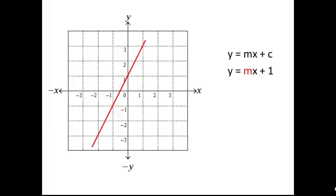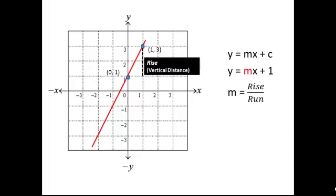To do this, we need to choose two points on the line. These are the two points that I've chosen. We then need to determine the vertical and horizontal distances between these two points. These are otherwise known as the rise and the run.